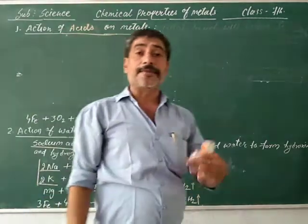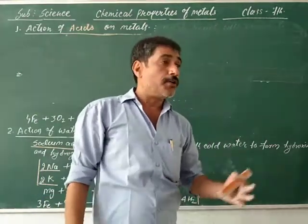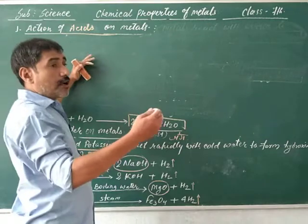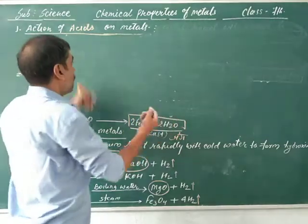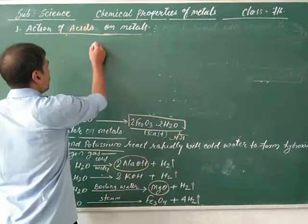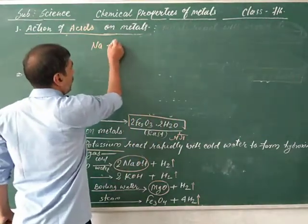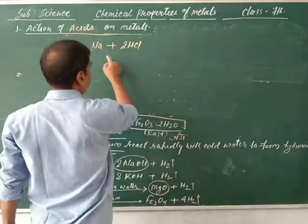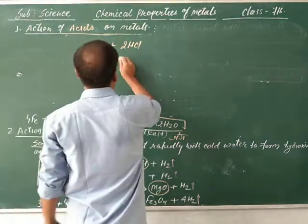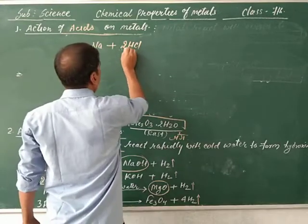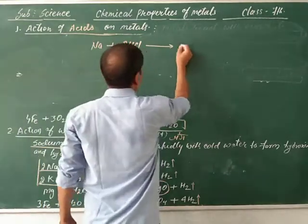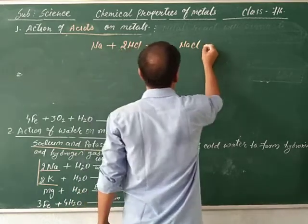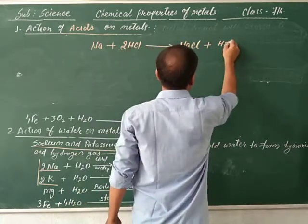Some of the metals can react with acid to form its salt plus hydrogen gas. For example, sodium reacts with dilute hydrochloric acid (HCl) to form sodium chloride (NaCl) plus hydrogen gas.